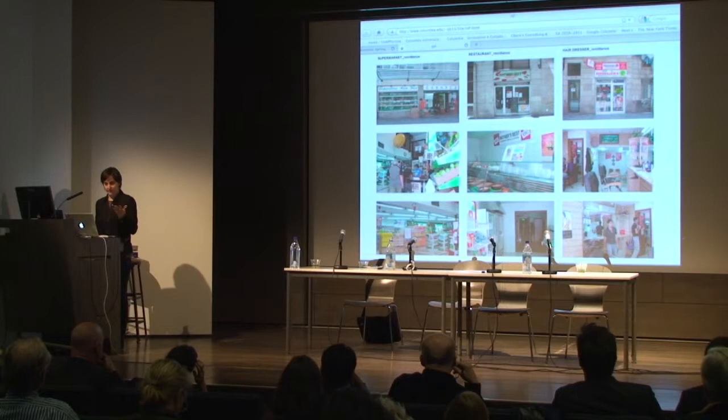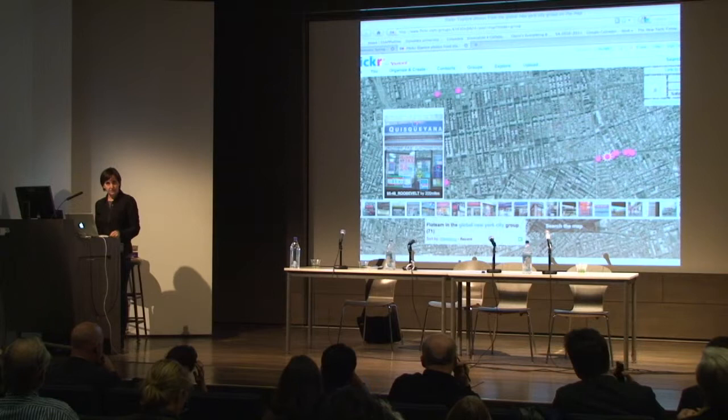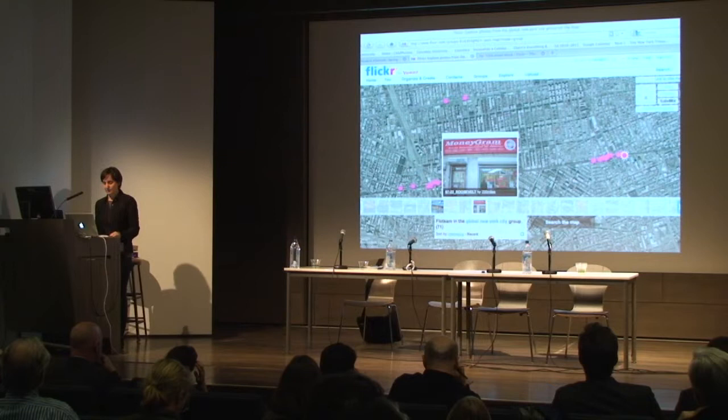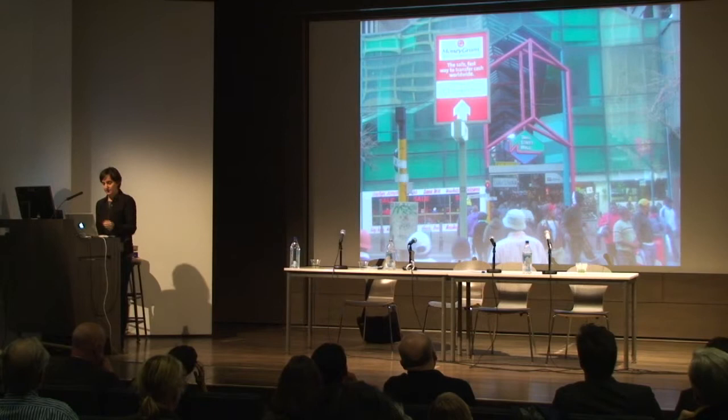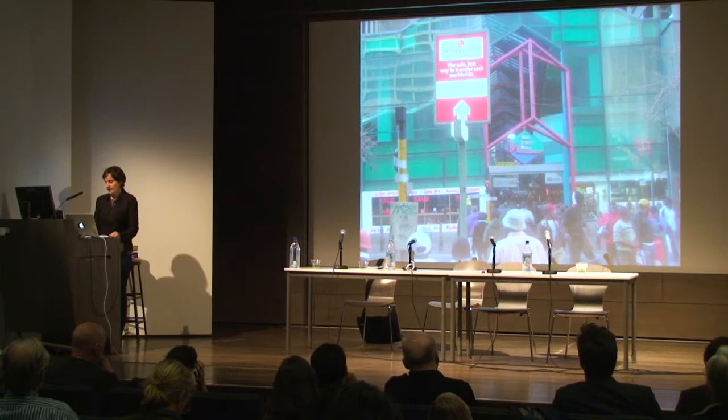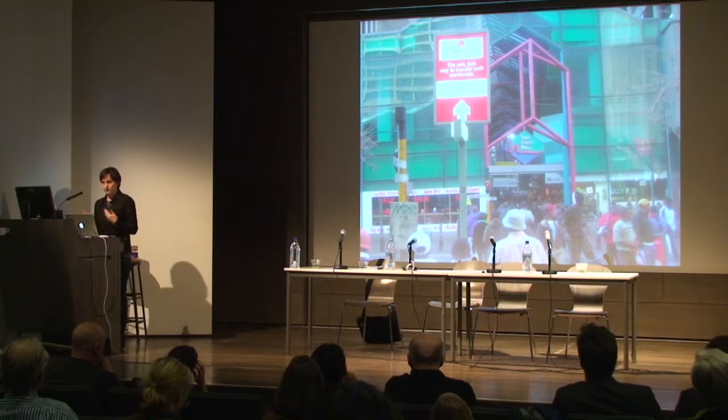This is on Roosevelt Avenue in Queens, where ethnicity changes every three blocks according to the kind of food restaurant you'd like to eat in. Mostly in these kinds of neighborhoods you find Western Union and MoneyGram — this one happens to be in South Africa as well. It's a well-known way of informally sending money around the world without having to track the amount of money that you're sending.